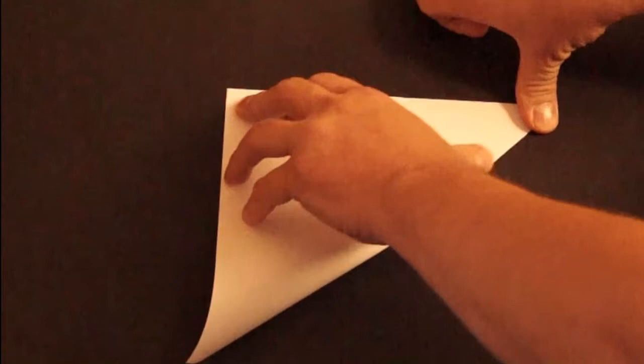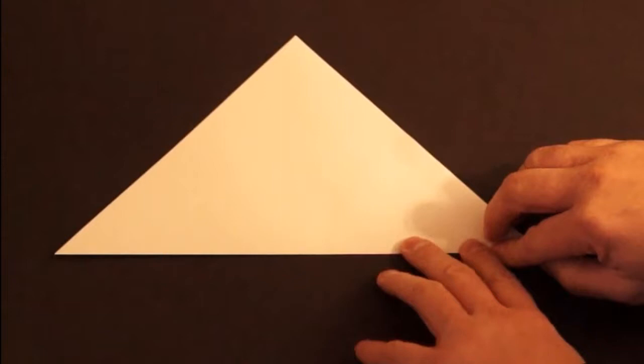First we start with a square. Fold one corner to the other corner to make a triangle. Line up the corners to the edges as best you can. Press down good on your fold.